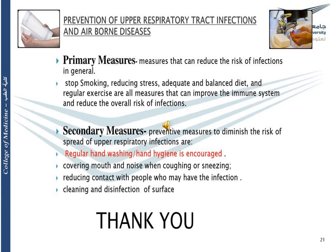Primary measures for prevention of upper respiratory tract infections and airborne diseases include eating a balanced, healthy diet to improve the immune system, reducing stress, avoiding smoking and alcohol, and exercising regularly. Secondary measures include regular hand washing and hygiene, covering the mouth while sneezing and coughing, maintaining social distancing of at least six feet, and regular cleaning and disinfection of surfaces by sanitizing them on a regular basis.